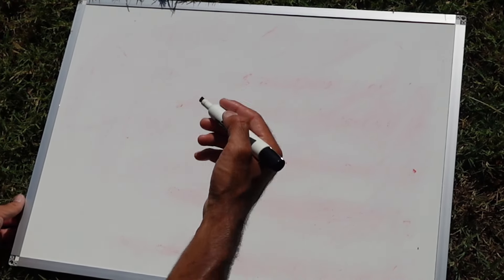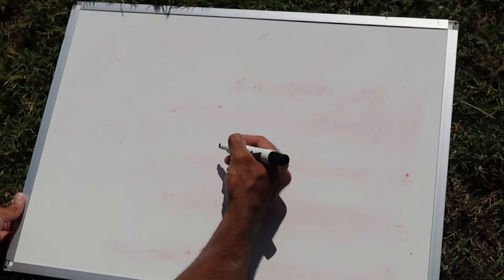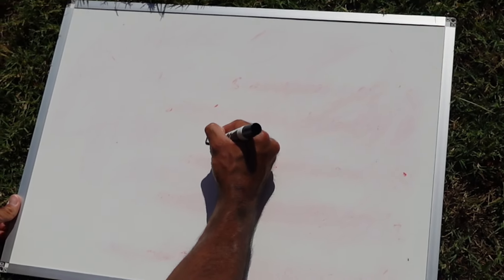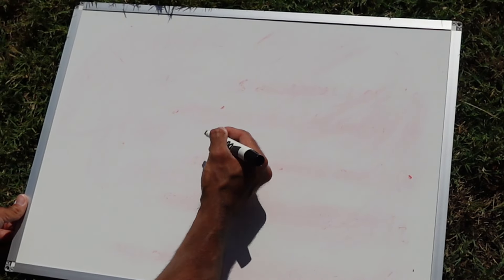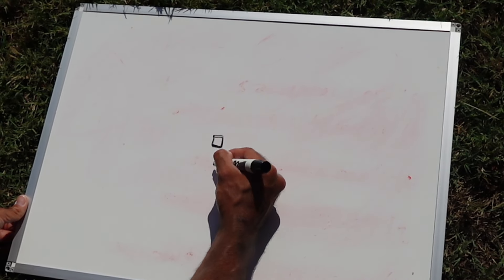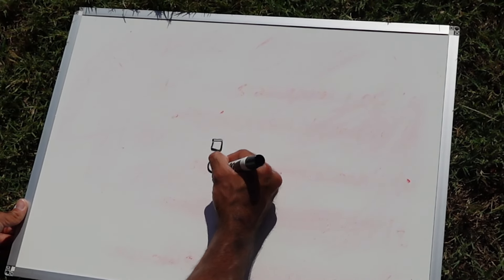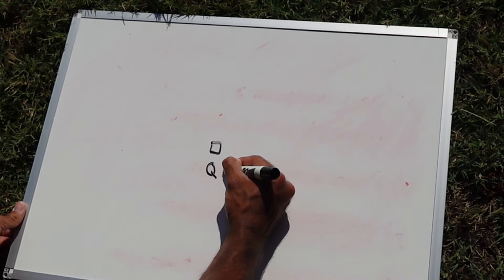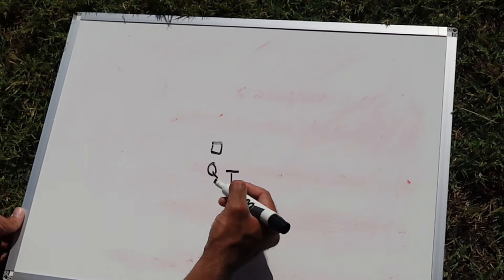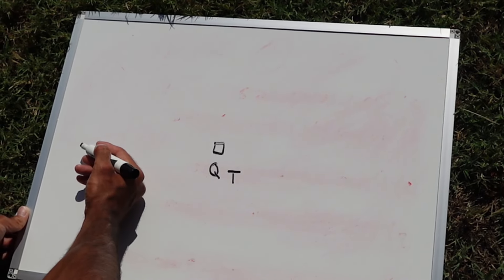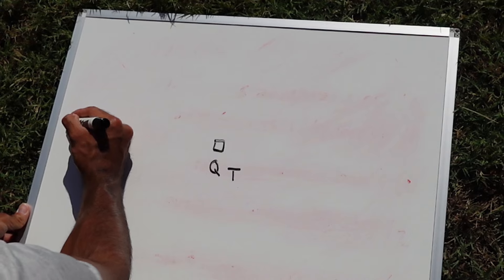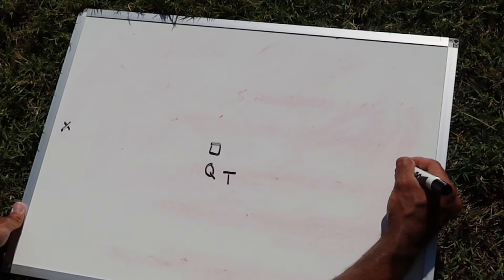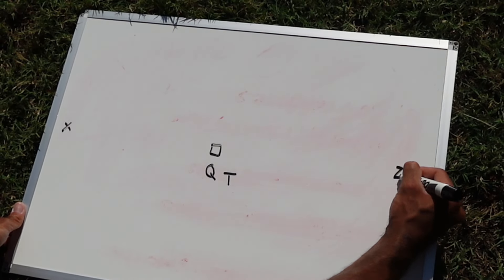The first formation we're going to draw out is a doubles formation. I'm going to draw this box right here as my center. The Q is obviously the quarterback and then a T would be labeled as your running back. The outside wide receiver on the left is going to be labeled the X, and then the outside receiver on the right is going to be labeled the Z.